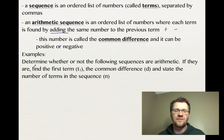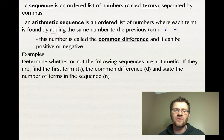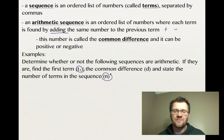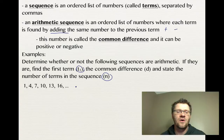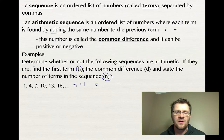Some examples: determine whether or not the following sequences are arithmetic; if they are, find the first term (t1), the common difference, and state the number of terms (n). For the sequence 1, 4, 7, 10, 13, 16 — it goes up by three each time — so our first term t1 equals 1, the common difference is 3, and there are 6 terms in this sequence.